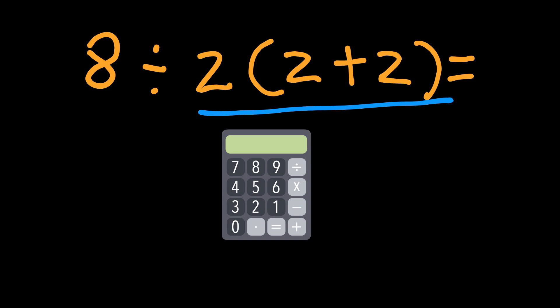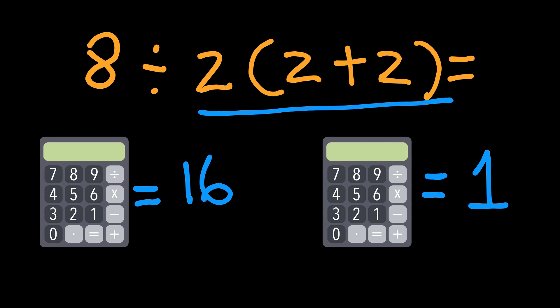Still not convinced? Next, let's test it on some calculators. Type 8 divided 2 parenthesis 2 plus 2 close parenthesis into your phone's calculator. Some calculators give 16. Others give 1. Especially older models or those using implicit multiplication. That's why the problem went viral. Even calculators can't agree unless you're careful with how you enter it. This tells us something important. Always use extra parenthesis when you write expressions. Don't leave it up to interpretation.